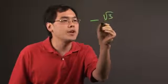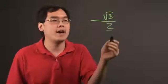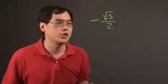Suppose you have the negative fraction, negative square root of 3 over 2. Obviously, you have the square root of 3 there, so you have a negative fraction with the square root there.